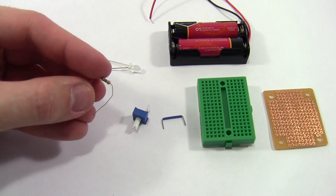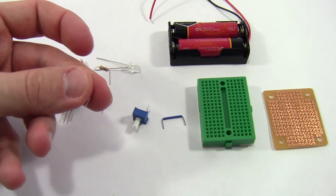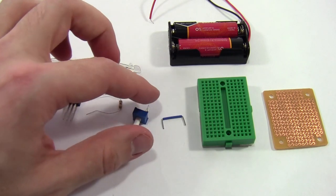We have a resistor. This is going to go in series with your LED to prevent it from burning out, and we'll talk about that a little more with the circuit diagram.